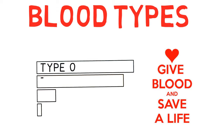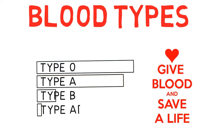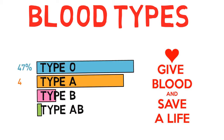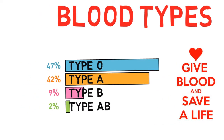There are four different blood types: O, A, B, and AB. Of these, O is the most common at 47% and AB is the least common at only a little over 2%.